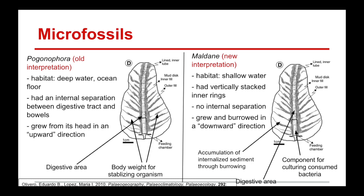The new interpretation, however, was that Tassilia ordemensis is a trace fossil left by a Maldanid worm, which lived not in deepwater but in shallow water, and had vertically stacked inner rings more consistent with the trace fossil. It had no internal separation and grew and burrowed in a downward direction. This interpretation allows us to view the digestive area not as just another part of the standard digestive tract, but as a component for culturing bacteria that the Maldanid worm would have consumed — something not relevant to the deepwater worm.